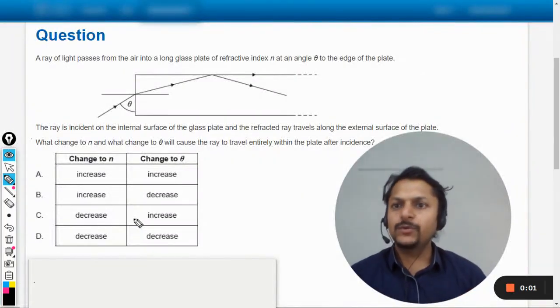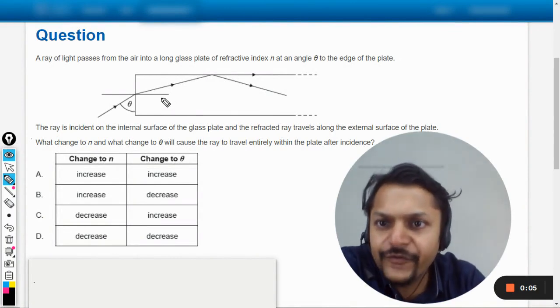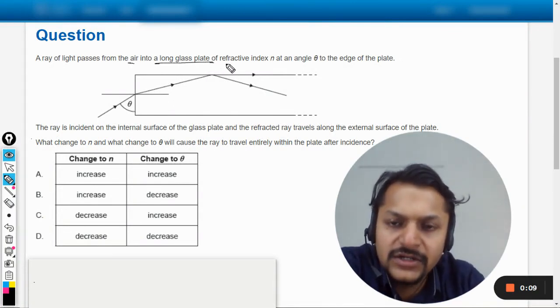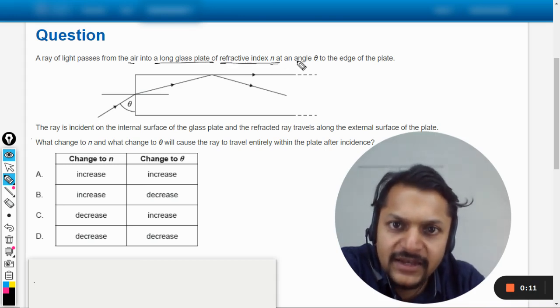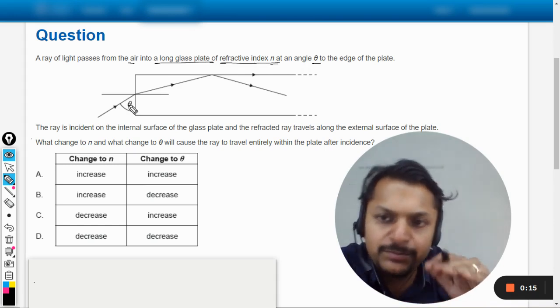Okay, dear students, let's see what is in this question. A ray of light passes from the air into a long glass plate of refractive index n at an angle theta. So it is hitting this glass plate at an angle theta, and obviously the light will now enter into the glass at the edge of the plate.